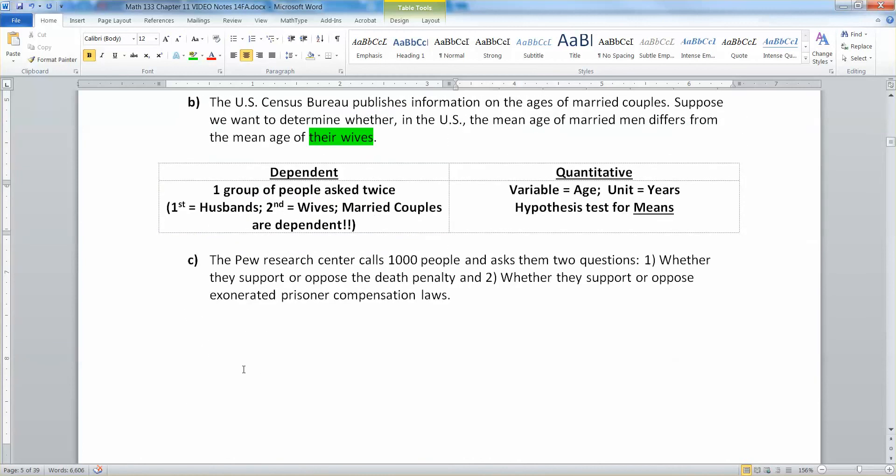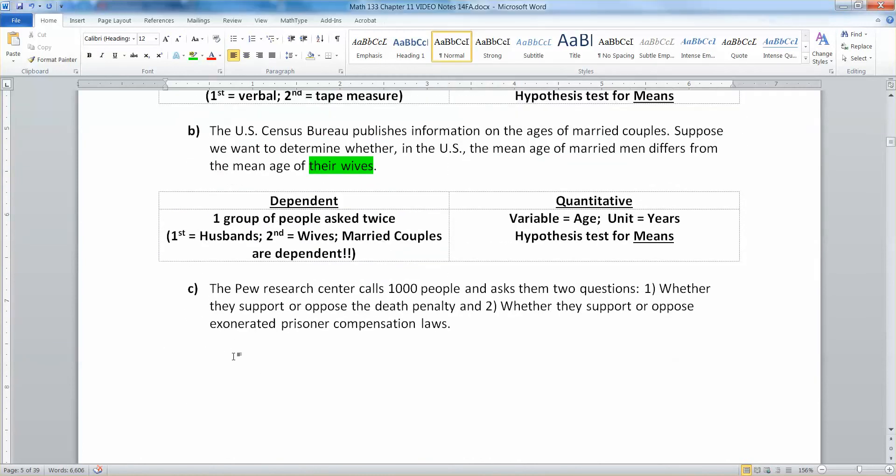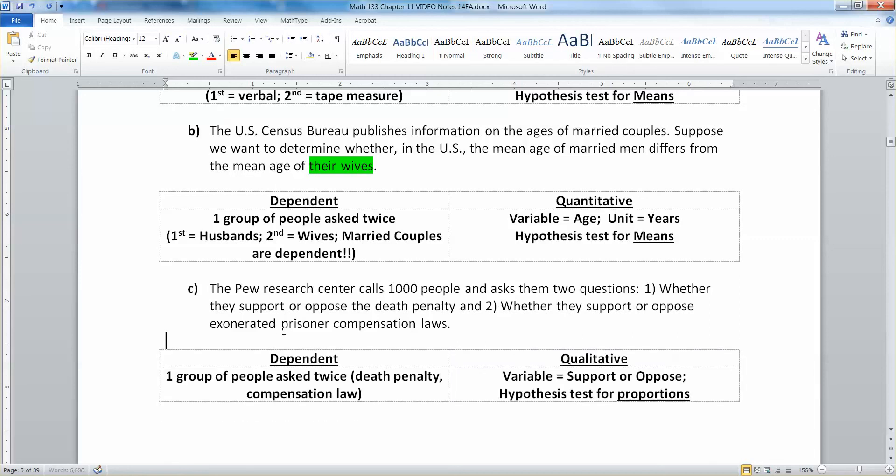Now suppose the Pew Research Center calls a thousand people and asks them two questions. Do you support or oppose the death penalty? Do you support or oppose exonerated prisoner compensation laws? Okay. Well, since they're asking the same group of people two questions, that's dependent as well. But this time it's qualitative.